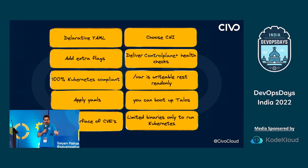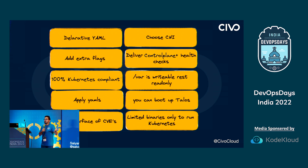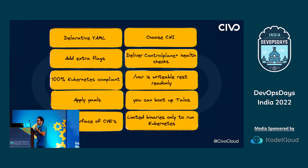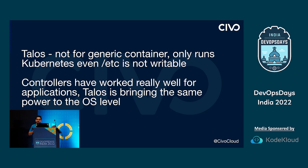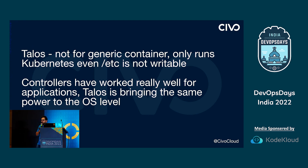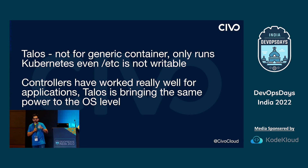Talos reduces the number of CVEs because there's no SSH and the upgrades are atomic. There are limited binaries, so you don't have to worry about all the other ones. It's not for generic containers — it only runs Kubernetes. The controllers that have worked really well for applications, Talos brings that same power to the OS layer. If you want to deep dive, you can go to my YouTube channel and watch the detailed video with a demo. Thank you.